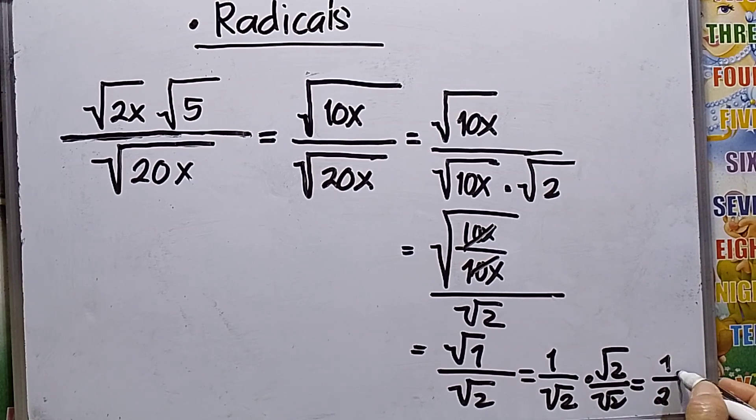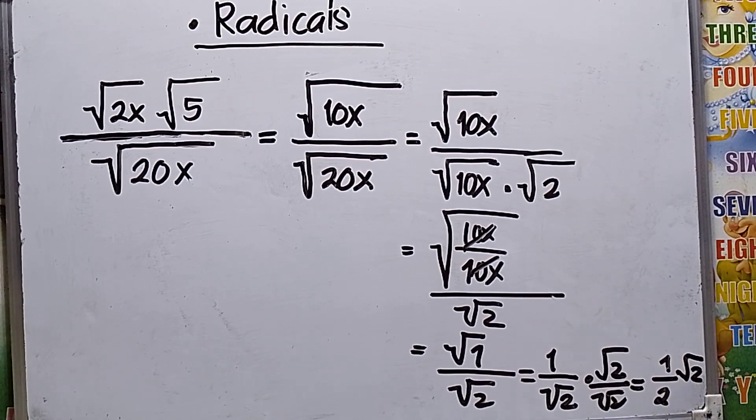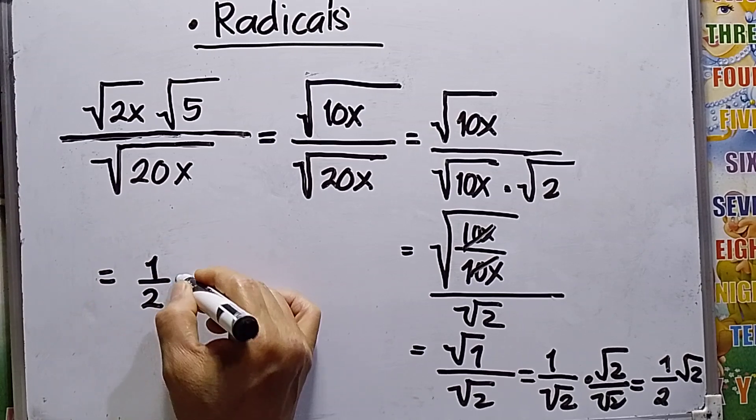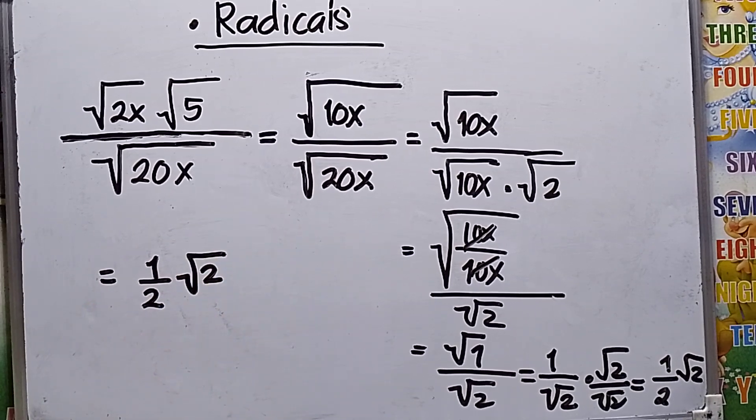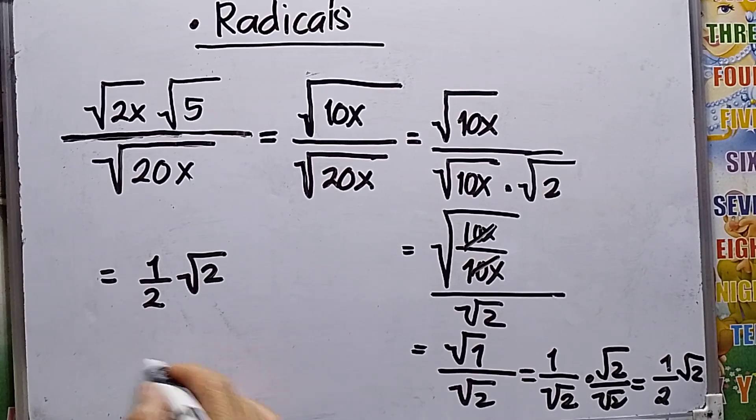So my final answer is 1 over 2 times square root of 2, or square root of 2 over 2. That's my final answer, and that's all.